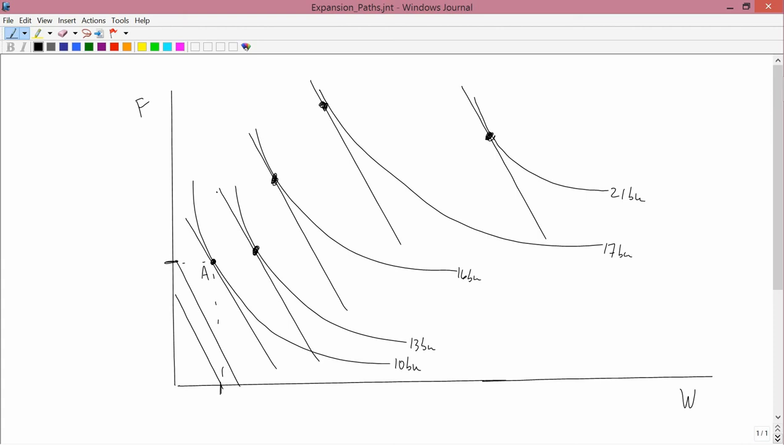If this is difficult for you to do, you can draw some other curves to help you out. For example, you could draw the family like here, and that gets you closer to drawing one that's exactly tangent to the isoquant.